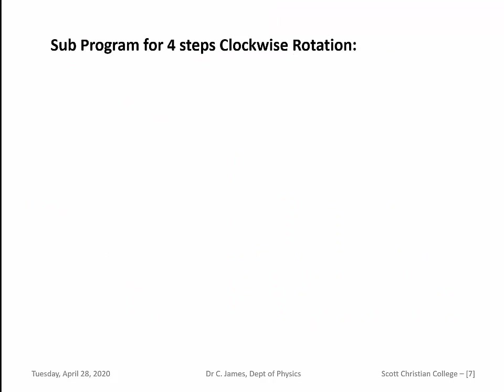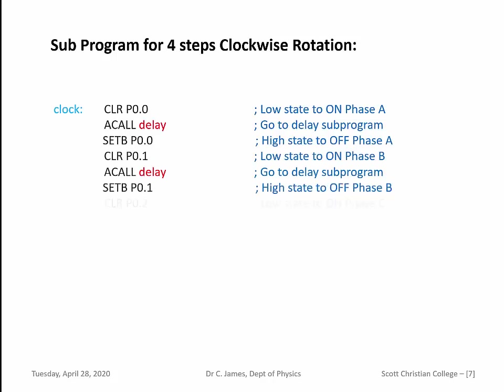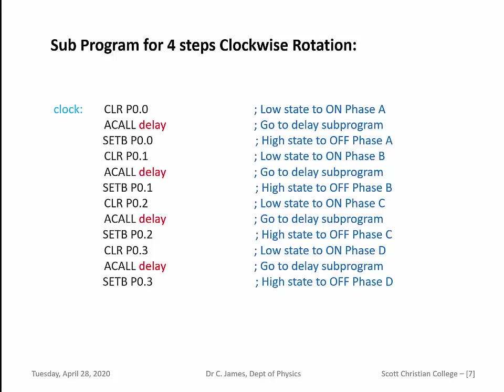In the clockwise sub-program, we give a zero to P0.0 to activate phase A, then a small delay, then switch off phase A. Next, switch on phase B via P0.1, delay, then stop B. Then switch on phase C, delay, stop C. Finally, switch on phase D, small delay, stop phase D. Phases A, B, C, D are sequentially energized, causing the motor to move four steps in the clockwise direction. Then control returns to the main program.